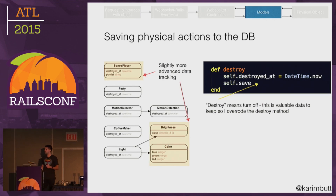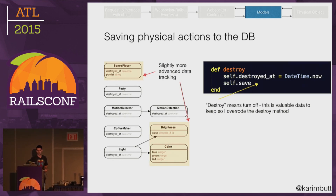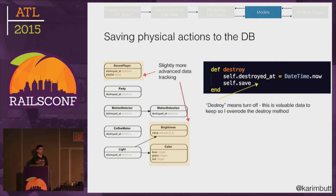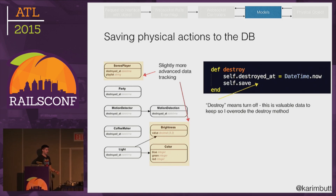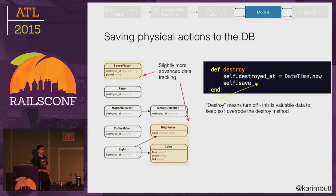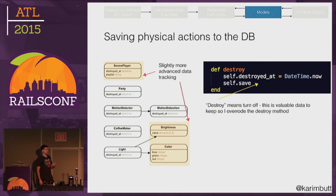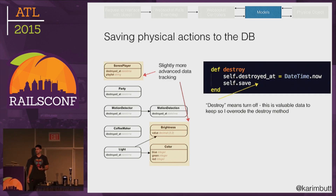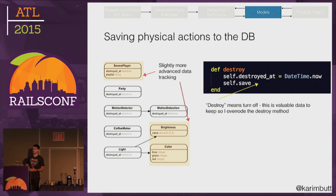The domain model is really simple in this application. I've got a Sonos player, a party, a motion detector which has many motion detections, a coffee maker, a light which has many colors and many brightnesses. I've just overridden the destroy method because with IoT the destroy is actually turning the object off, and I actually want to save a reference to when that object was turned off.